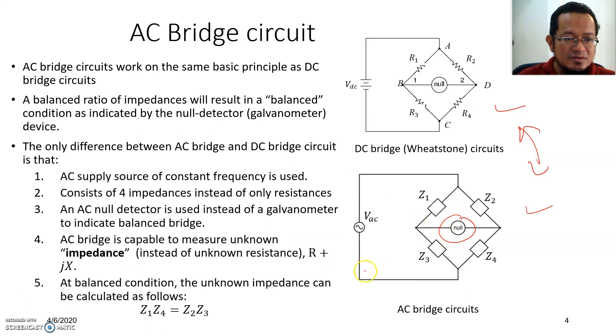The difference between AC bridge and DC bridge are as follows. The AC bridge uses an AC supply source to provide the power for the network with a constant frequency, and it consists of impedances instead of only resistances. As we discussed before, at balance condition the unknown impedance can be calculated as follows: Z1 multiplied by Z4 equals to Z2 multiplied by Z3, the opposite, pretty much like Wheatstone but replaced by impedance.